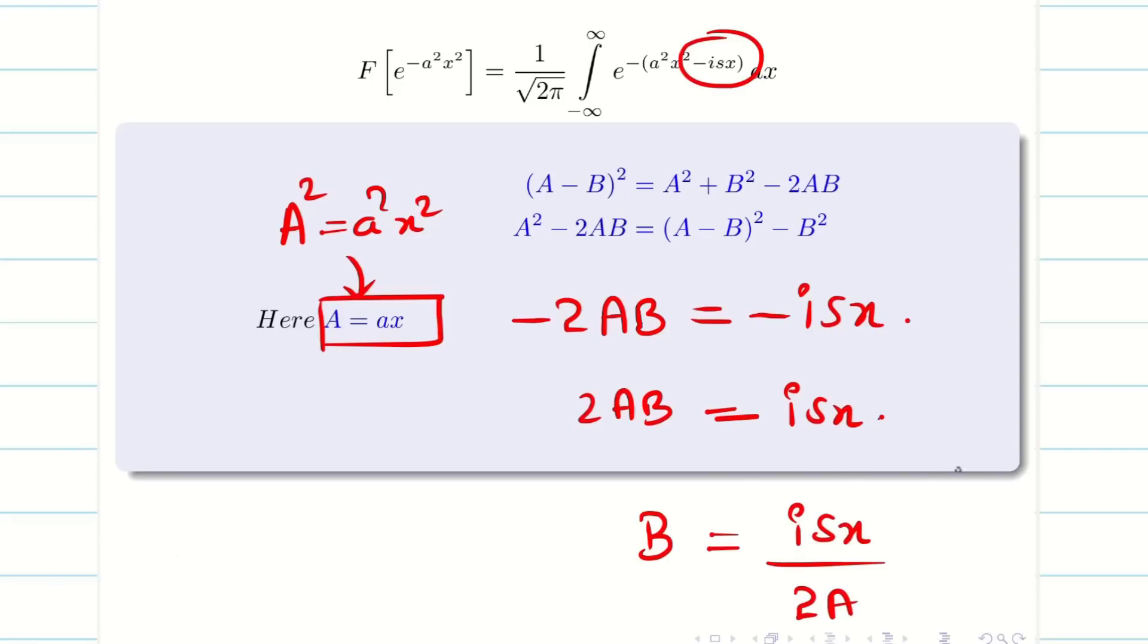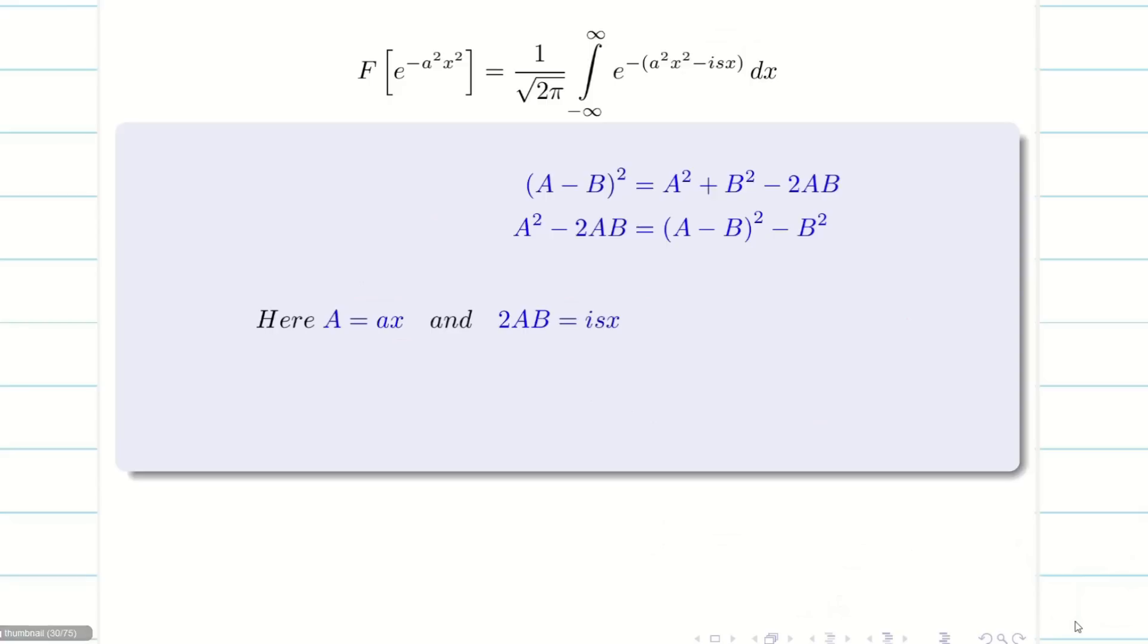We have capital A equal to ax. So isx divided by 2ax. The x's cancel. We will be getting is divided by 2a. So I am writing everything one by one.